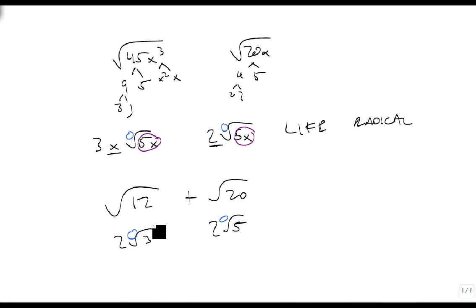So even though they're both square roots, their radicands are different. The 3 is different than the 5, so these are not like radicals. And we would not be able to add them together if we were adding them.